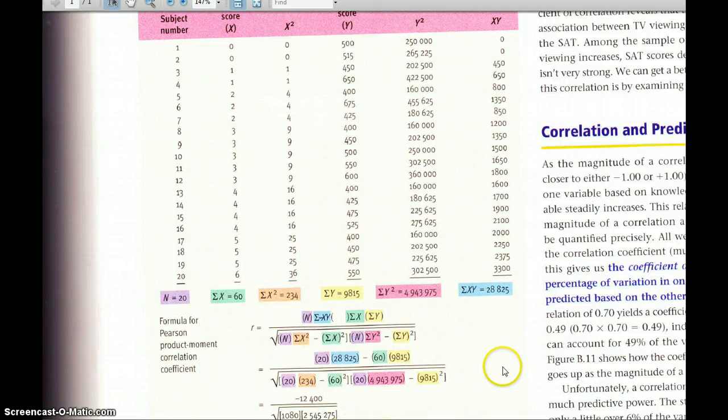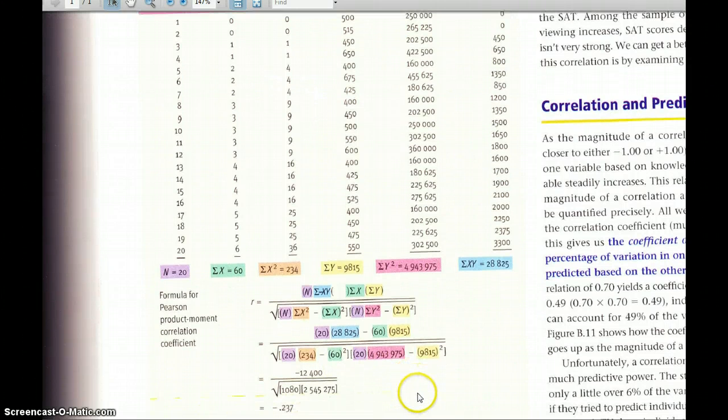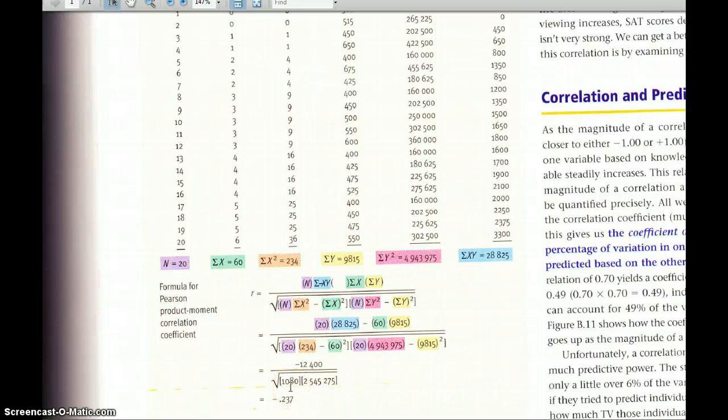So what I would do here is I would first of all do 60 times 60 and write that number inside brackets. Then I would multiply 20 times 234 and write that number inside brackets and then do the subtraction. So you're going to do 20 times 234 minus the 60 squared. Okay, and if you do that you will end up with 1080. So you can check your work there to make sure you've done that right.